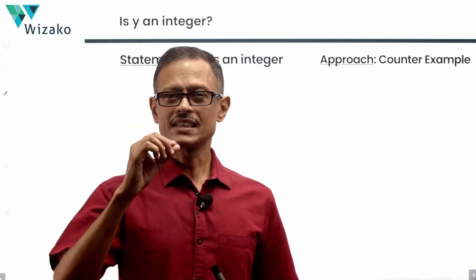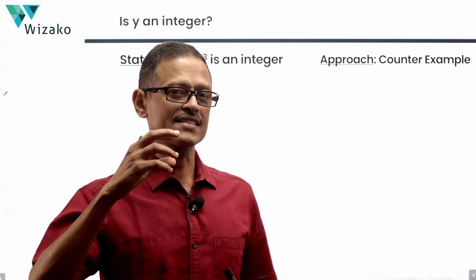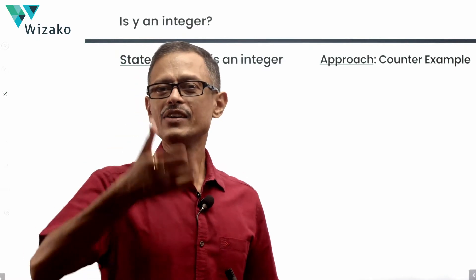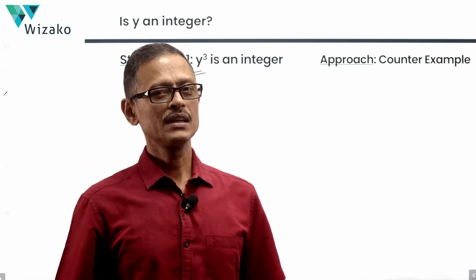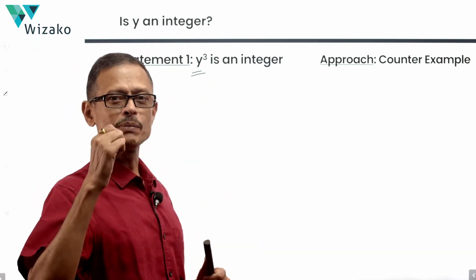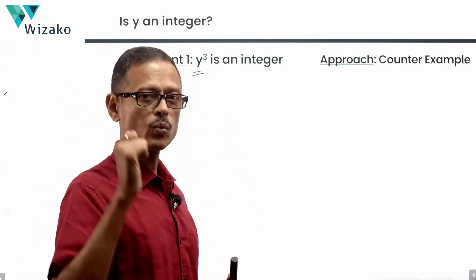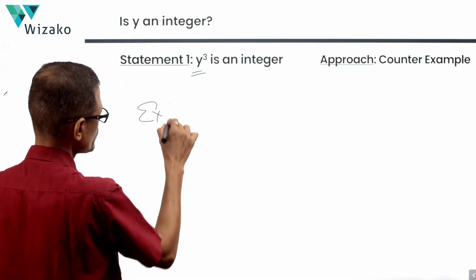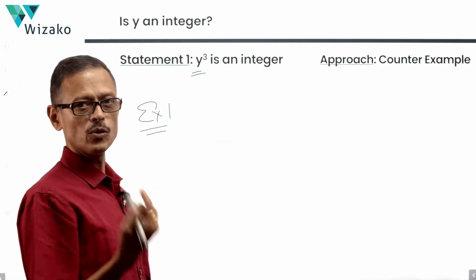So in all of these things, the trap is many times we will start assigning value for y and not assigning a value for y cube. Let's follow what the statement says. It's saying y cube is an integer. So don't pick a value for y, pick a value for y cube. Approach is counter-example. So I am striving to see if I can get a yes and a no.